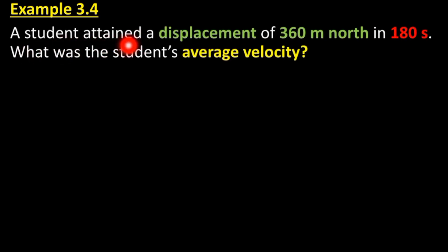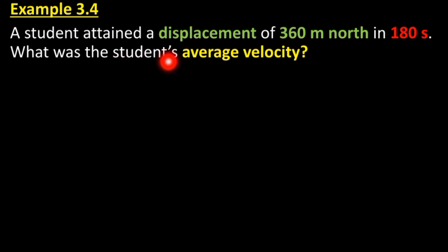Example 3.4: A student attained a displacement of 360 meters north in 180 seconds. What was the student's average velocity?